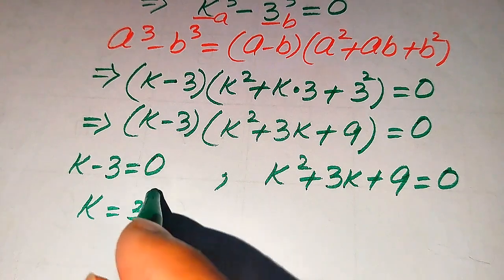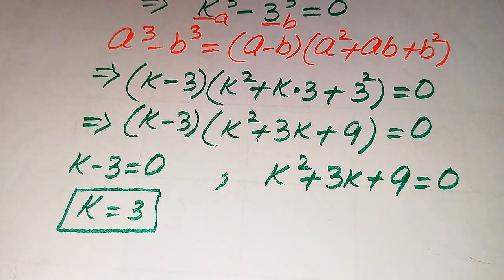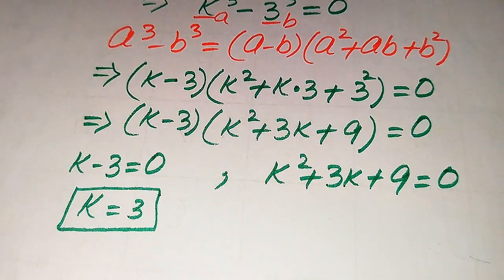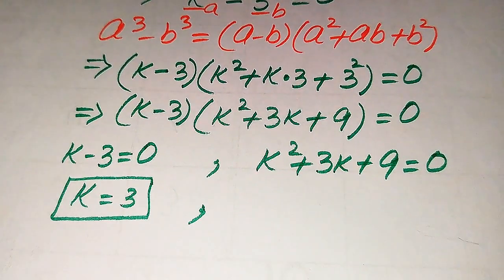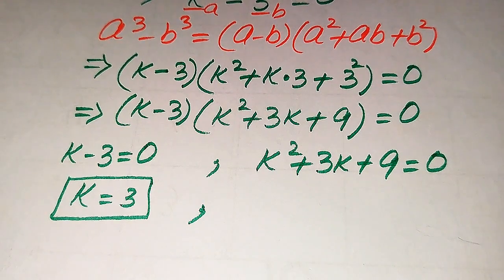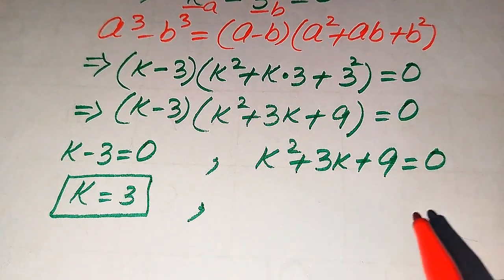From the first case we easily get k equals 3, which is the first solution of the given equation. To find the other values, we solve the quadratic equation. There are three methods: factorization, completing the square, and the quadratic formula. Here we use the quadratic formula.